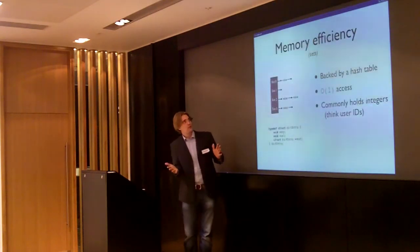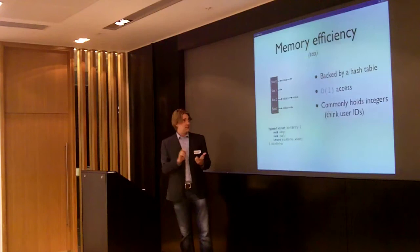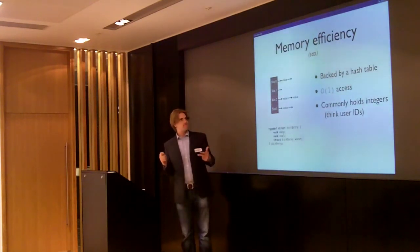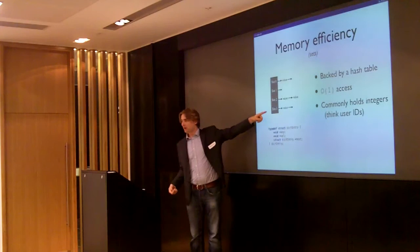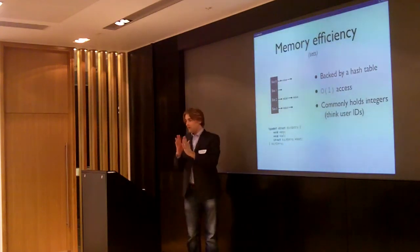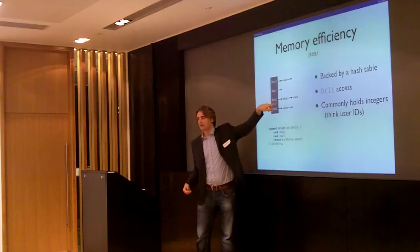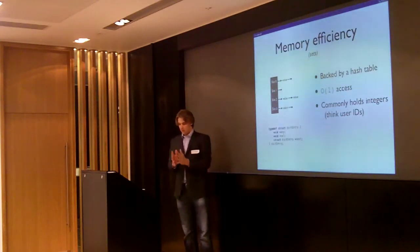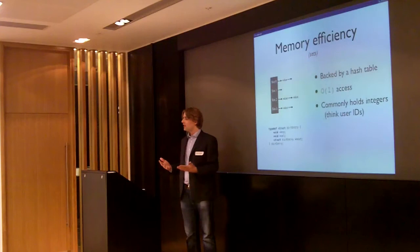Now I'm talking about memory efficiency on sets. For hashes we have zip maps, for lists we have zip lists, and for sets we have something new in 2.2. Currently, sets are backed by a hash table. A hash table has slots — always a power of 2 — and every slot can hold a linked list of values. When you have a value, you apply a hash function that gives an integer, take the modulo of the number of slots, and you have the slot where the value goes. That yields constant-time lookup regardless of the hash table size.